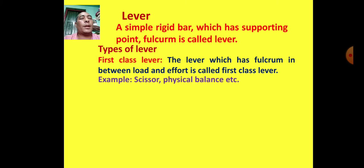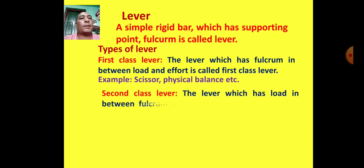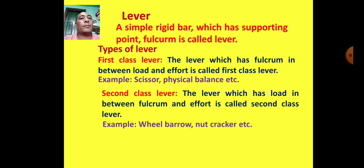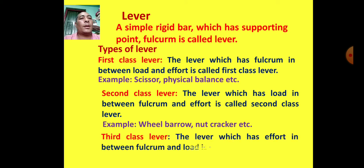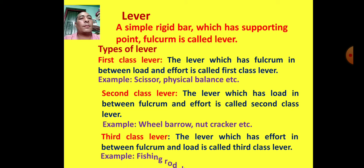Second class lever: the lever which has load in between fulcrum and effort is called second class lever. Examples: wheelbarrow, nutcracker, etc. Third class lever: the lever which has effort in between fulcrum and load. Examples: fishing rod, broom, etc.